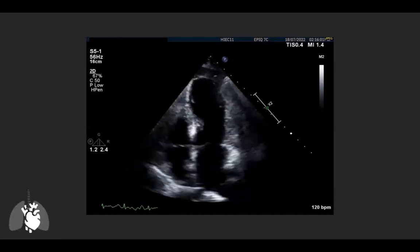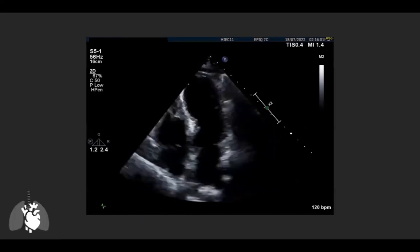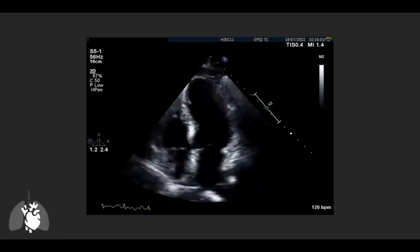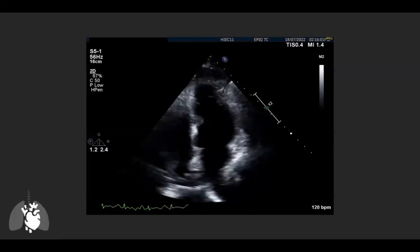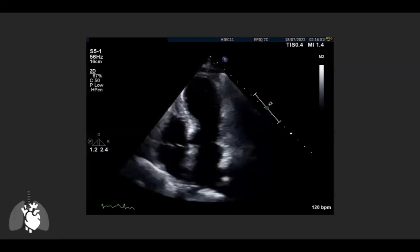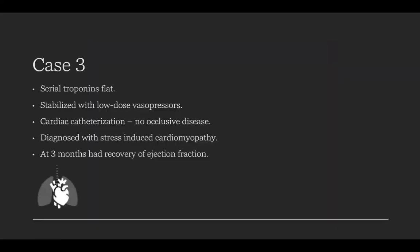In this scenario, two possibilities exist: a large LAD infarct wrapping around the apex, or — more likely — stress-induced cardiomyopathy. Because serial troponins were flat and the EKG showed no gross ischemic changes, stress-induced or Takotsubo cardiomyopathy was felt to be most likely. However, the diagnosis requires ruling out coronary disease, so cardiac catheterization was performed and showed no occlusive disease. She was managed with cardiogenic shock therapy and recovered her ejection fraction at three months.